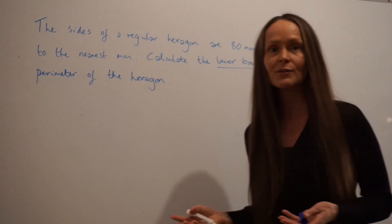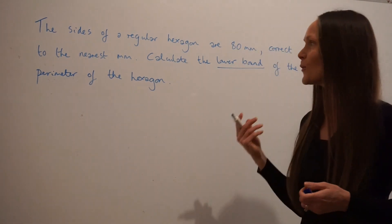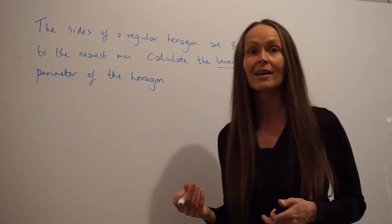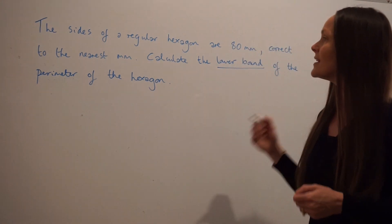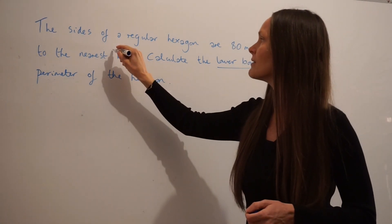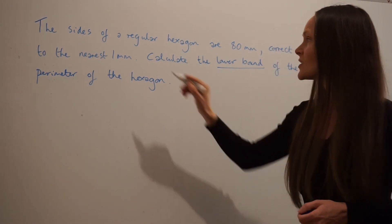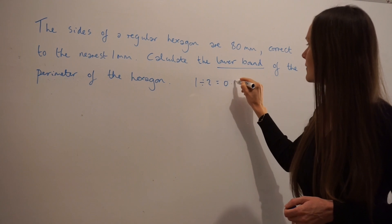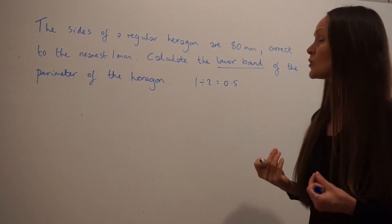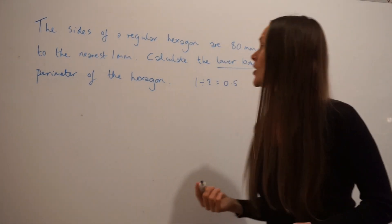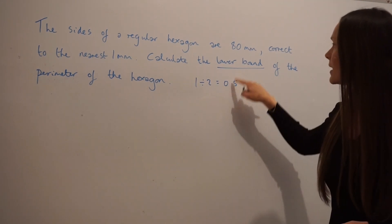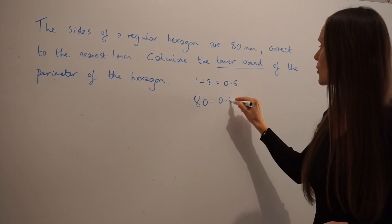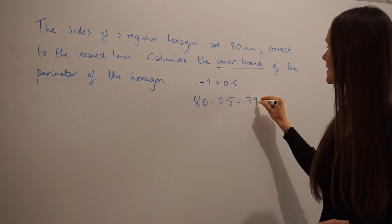If you've seen my first video on upper and lower bounds, hopefully you'll know that nice little trick I showed you to quickly work out upper and lower bounds. In this question we're rounding to the nearest one millimetre. So we take the number 1 and we divide it by 2, giving us 0.5. Now to work out the lower bound, you have to subtract this number from 80. So 80 minus 0.5 is equal to 79.5.